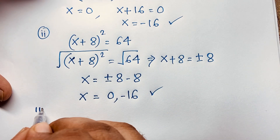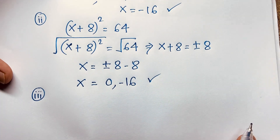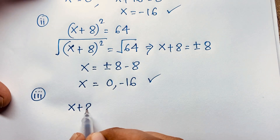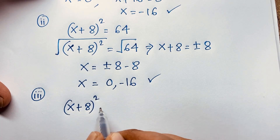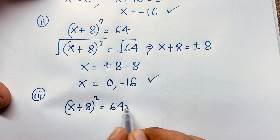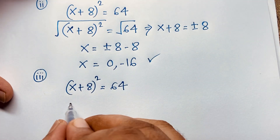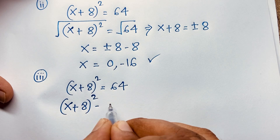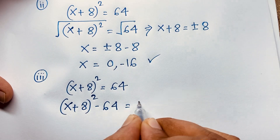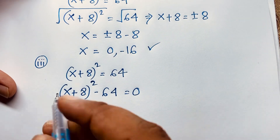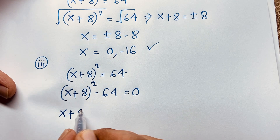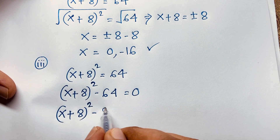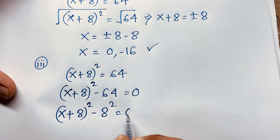Third method: (x + 8)² = 64. This expression becomes (x + 8)² − 64 = 0, which is (x + 8)² − 8² = 0.